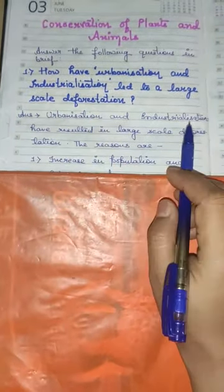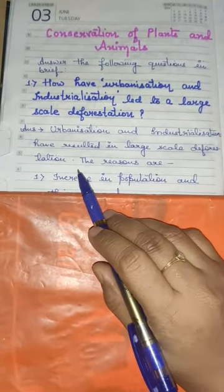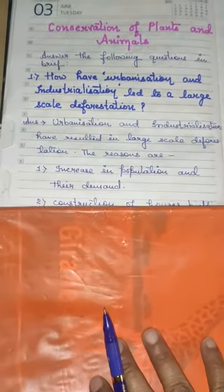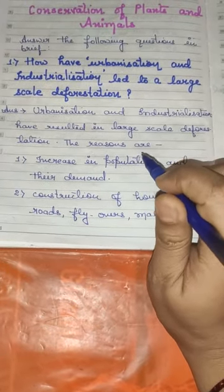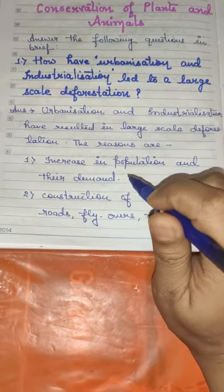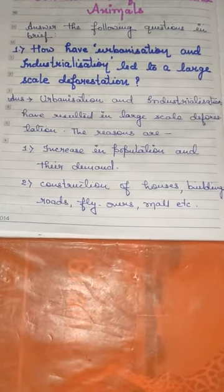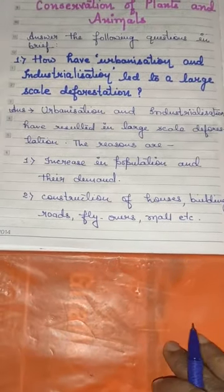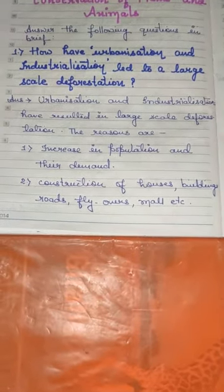Now we will see the explanatory answer. Urbanization and industrialization have resulted in large scale deforestation. The possible reasons are: first, increasing population and their demand — day by day populations are increasing, and with increasing population the demand is increasing, hence the land area requirement increases which leads to destruction of forest. Second, construction of houses, buildings, roads, flyovers, malls, etc.